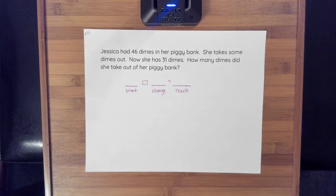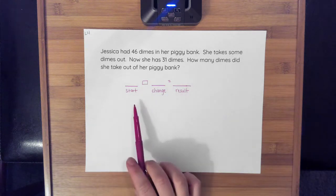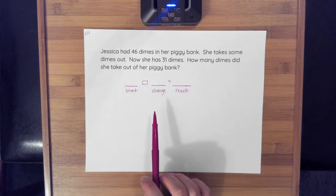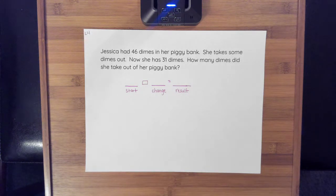I'm going to read through the word problem, and I want you reading along with me, thinking about where you would put each number or what you don't know. Jessica had 46 dimes in her piggy bank. She takes some dimes out. Now she has 31 dimes. How many dimes did she take out of her piggy bank?